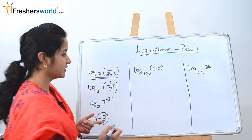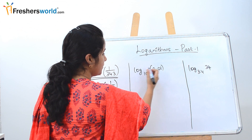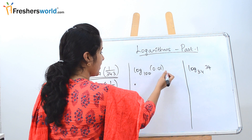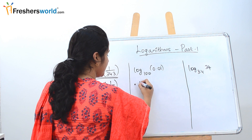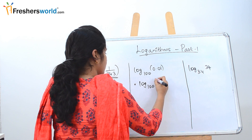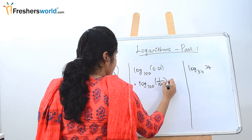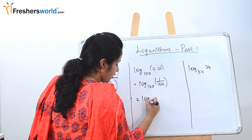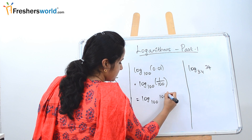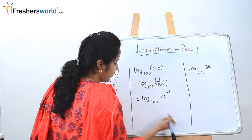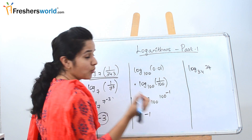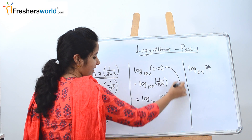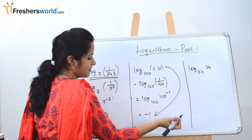Next sum: log_100(0.01). Since 0.01 = 1/100, and 100 moved to the top gives 100^(−1), the value is −1. So log of 0.01 to the base 100 is equal to −1.